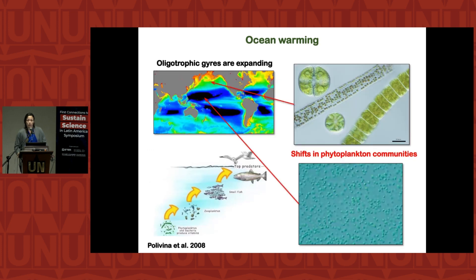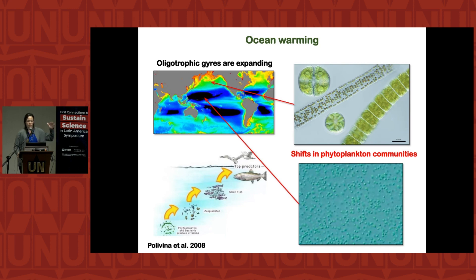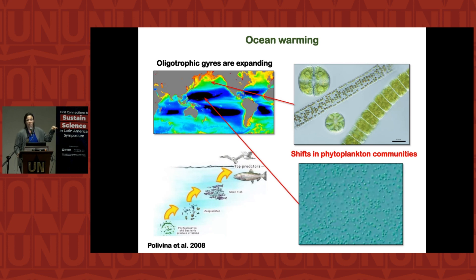The main problem with surface warming isn't just less phytoplankton — it's that the type of phytoplankton changes. When the water is stratified you get smaller phytoplankton. They may be as abundant in biomass, but they are distributed over the water column so you can't see them from the surface. The problem is that they are small: small animals eat them, then other small animals eat those, creating a much longer food chain. Every time you go from one trophic level to the next you lose energy, so the longer the food chain, the less fish we and other animals have to eat.